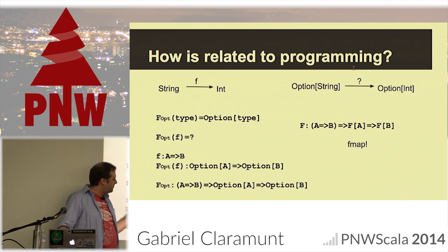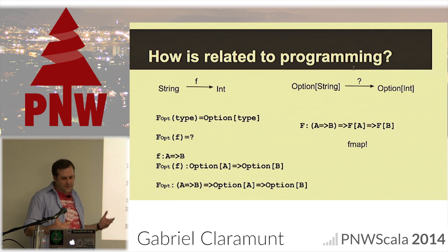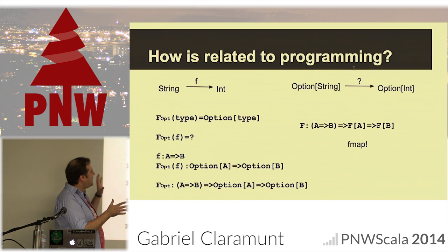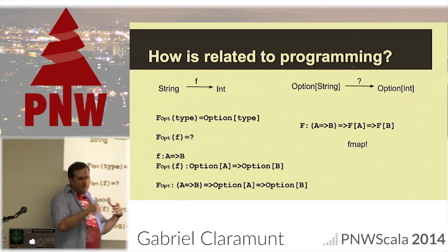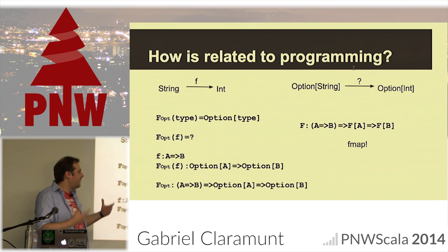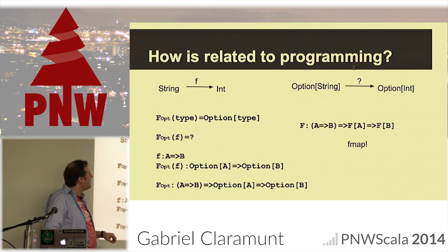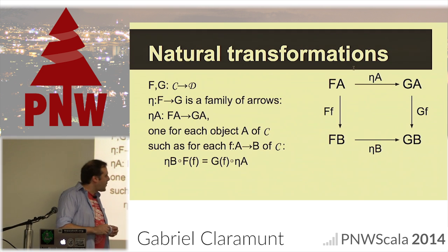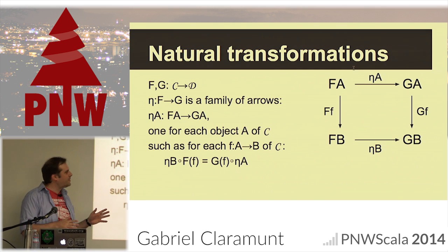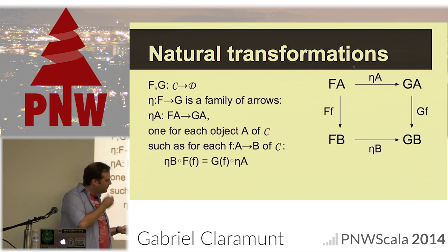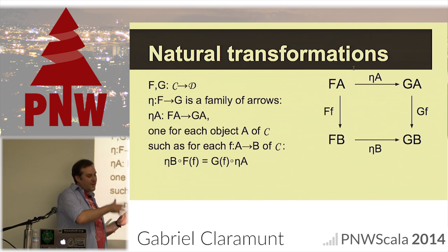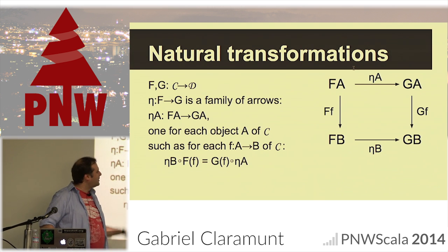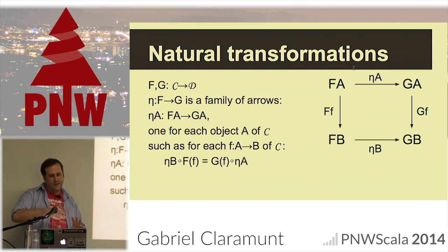Functors are one of the most interesting things. Endofunctors are what allow you to work with type constructors — basically any higher-kinded type is a functor. Natural transformations are really interesting too because they allow you to move from one functor to another. You can think of functors as objects and natural transformations as the arrows, and in category theory everything forms a category — so you can reapply the same reasoning.